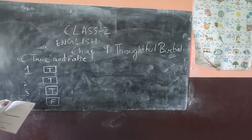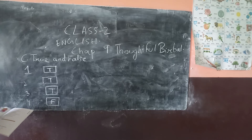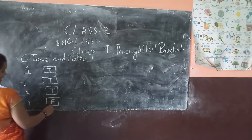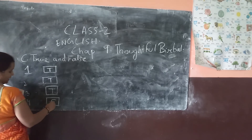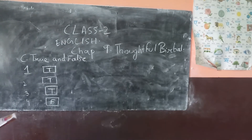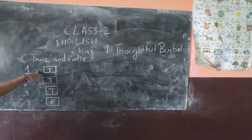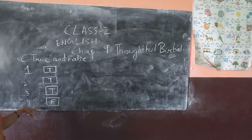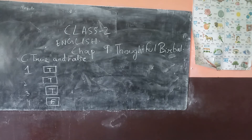Fourth one: a guard take the poor man — this is false, so write F in the box. Summary: the first one is T, the second one is T, the third one is T, and the fourth one is F. Do it.